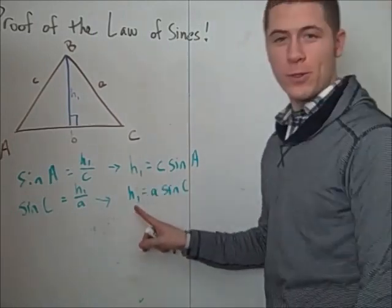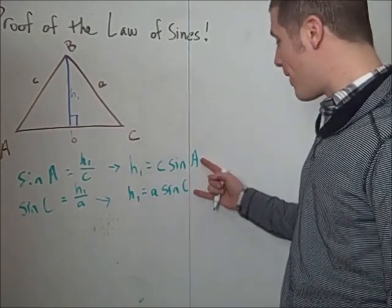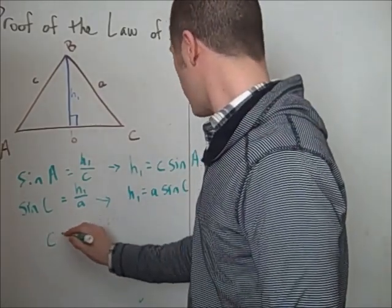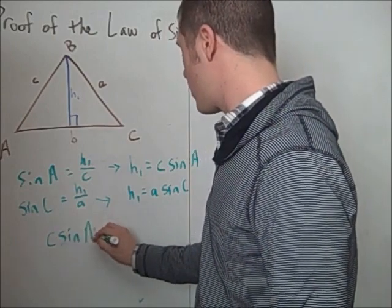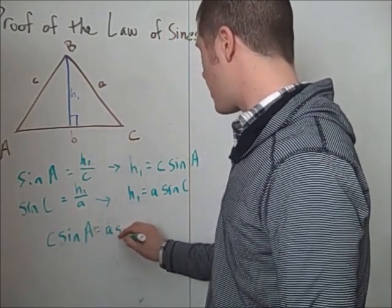Since H1 clearly equals H1, I can set these two equal to each other. So c times the sine of A is equal to a times the sine of C.